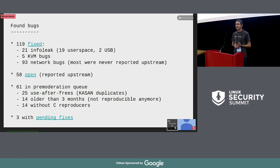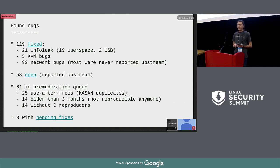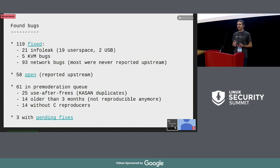Almost 100 networking bugs. Most of those bugs are never reported upstream because the networking people at Google just fixed them right away. 58 bugs are still open, and 61 are stuck in the generation queue. Most of them are use-after-free bugs which have already been reported by KASAN. Some of them just don't have reproducers or are not reproducible anymore. Three bugs have pending fixes, meaning the fix has already landed but Syzbot is waiting for it to reach all the tracked trees.